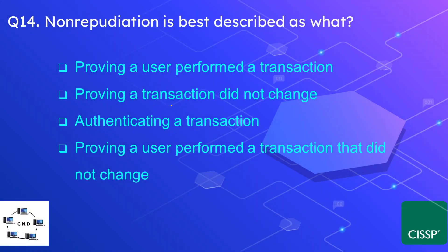Question number fourteen: non-repudiation is best described as — proving a user performed a transaction; proving a transaction did not change; authenticating a transaction; or proving a user performed a transaction that did not change. The correct answer is proving that a user performed a transaction and that the transaction did not change.